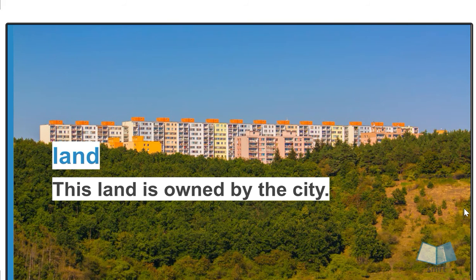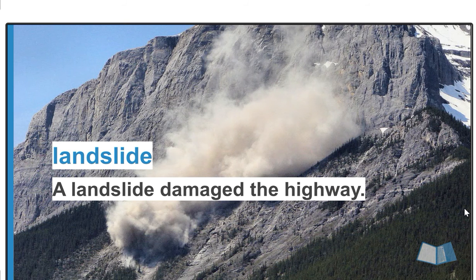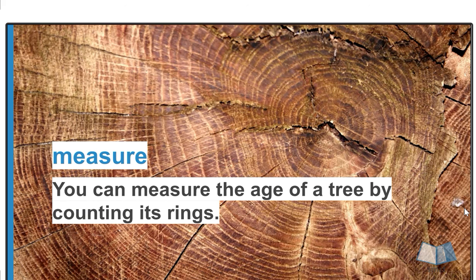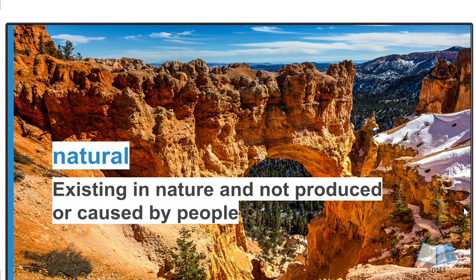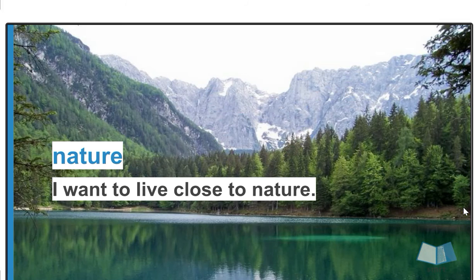Land — puede ser la tierra, o también un terreno. Landslide — un derrumbe; like when you go to places like Jalisco or Nayarit and you pass through the mountains on the highway, in those places we can have regular landslides because of the movement of the cars. Measure — medida. Natural — natural. Nature — naturaleza.